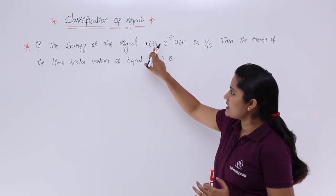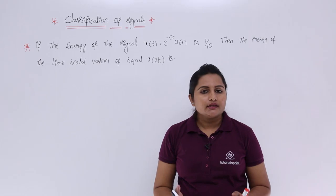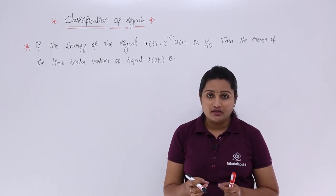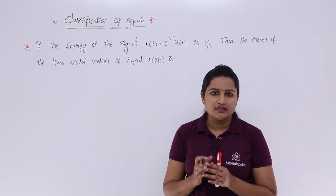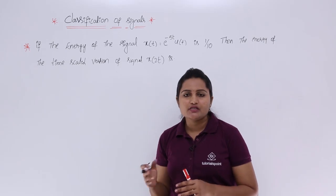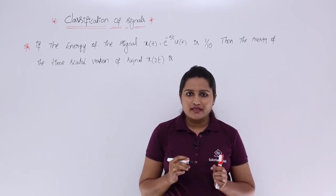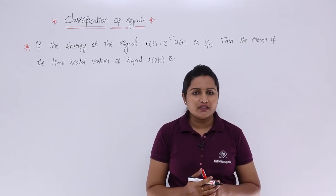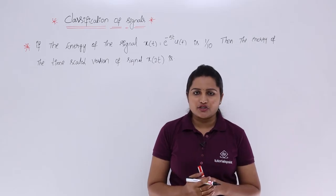You know that x(2t) is the time scaled version of x(t). They have given the energy of x(t), meaning x(t) is an energy signal, and they have given the corresponding energy associated with x(t). Now we need to calculate the energy for the time scaled version, that is for x(2t).